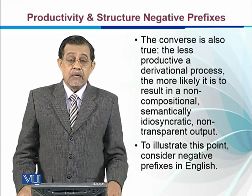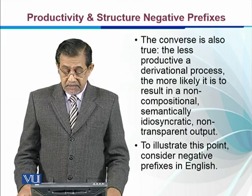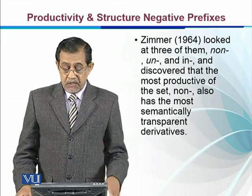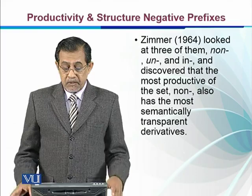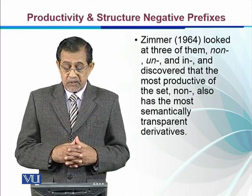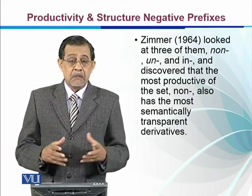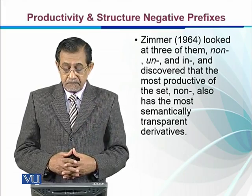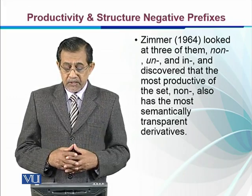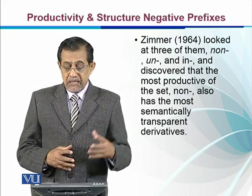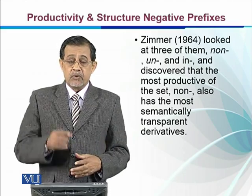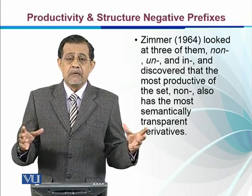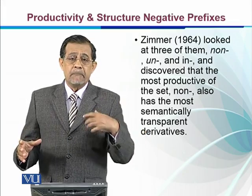We can understand this with some examples. Let's take the negative prefixes in English from Zimmer. We look at three affixes: non-, un-, and in-. These three affixes are normally used to make a word negative. Zimmer discovered that the most productive of the set, non-, also has the most semantically transparent derivatives — its meaning is very clear, understandable, and predictable.